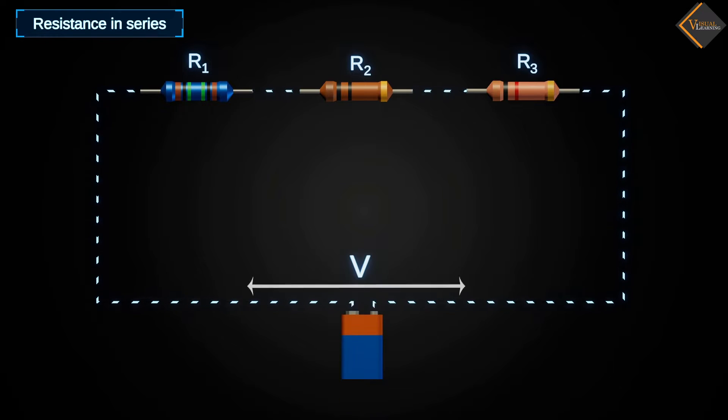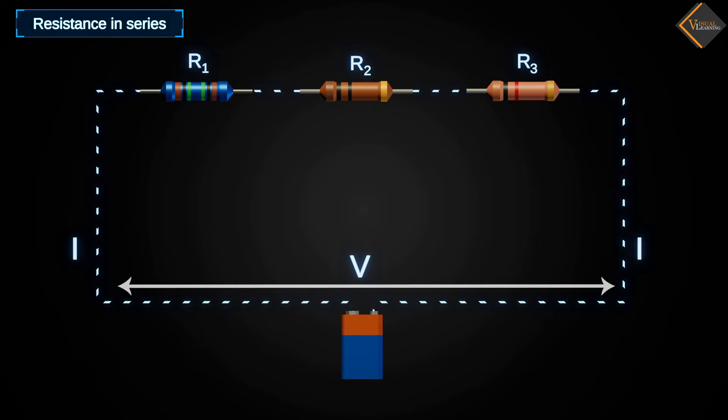When we apply voltage to the circuit, current flows through the circuit passing through all three resistors. We notice that in a series connection, the current remains the same while the potential or voltage is divided among the three resistors.